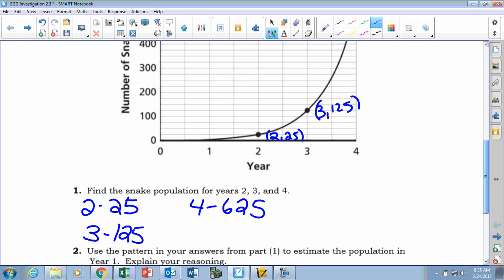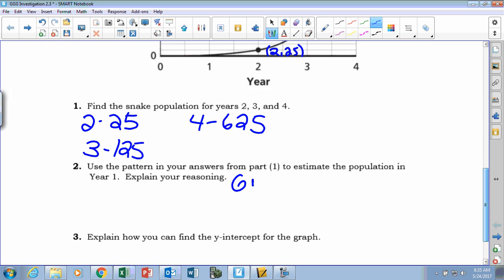Right, because 25 times 5 is 125, 125 times 5 is 625, right? So if our growth factor is five, what should our population be in year one then? How do you find that? What are you going to do? Divide 25 by five, right? We have to go backwards. So if you take 25 and divide it by five, you get five snakes.